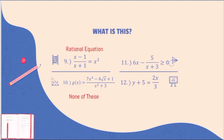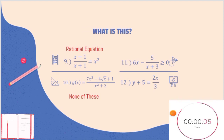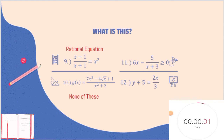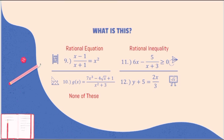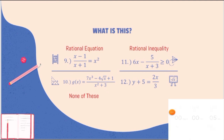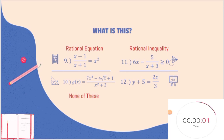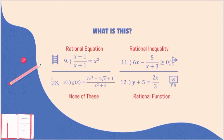We are now on number 11. Number 11 is a rational inequality. How about number 12? Number 12 is a rational function. There is a presence of two variables here, where y is f(x).